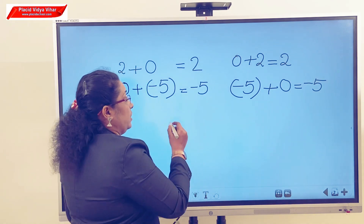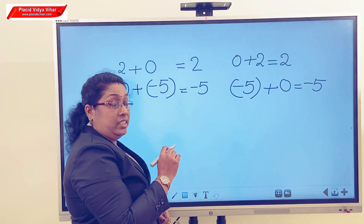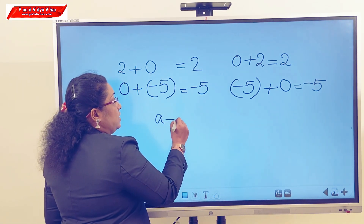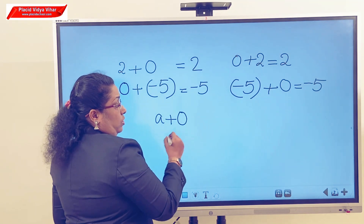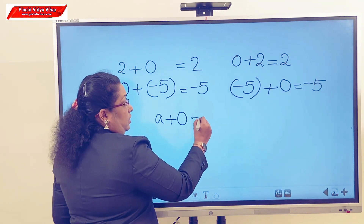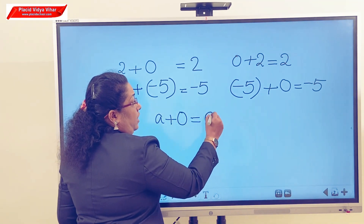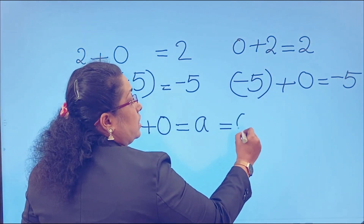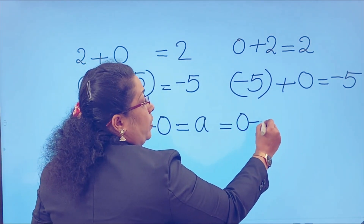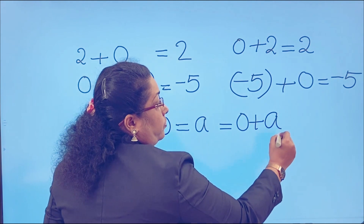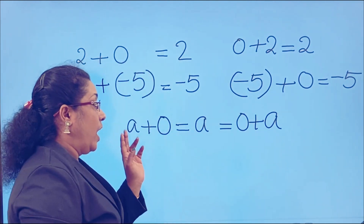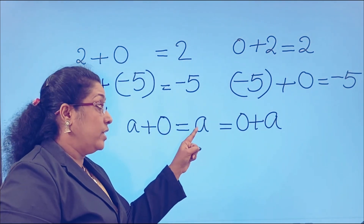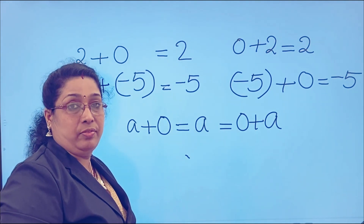That is, if A is an integer, then A plus 0 is equal to A, which is equal to 0 plus A. If we add any integer with 0, we get the same integer itself.